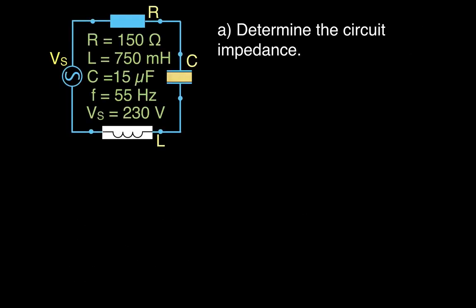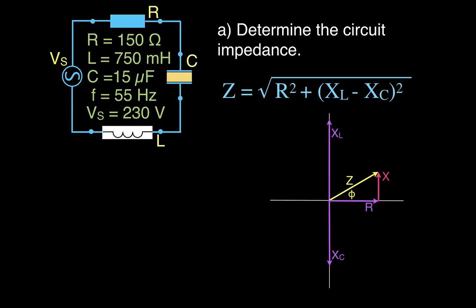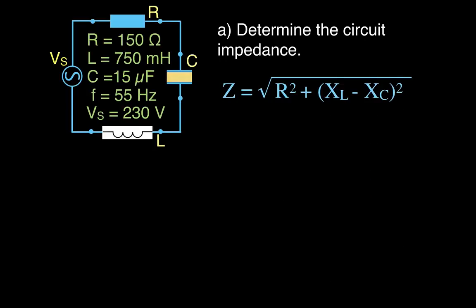The first thing we're going to do is determine the circuit impedance. The equation we use is Z equals the square root of R squared plus the inductive reactance minus the capacitive reactance, all squared. This comes from the impedance triangle — it's just the Pythagorean theorem. Z is the hypotenuse, and we take the difference of the inductive and capacitive reactances to get X, forming our impedance triangle.